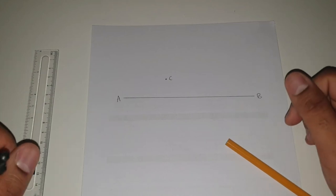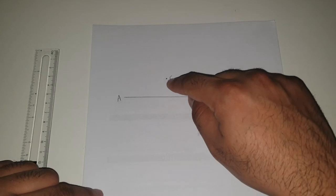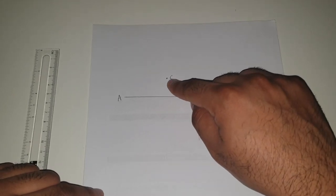In this video I'm going to show you how to draw a perpendicular bisector through a point that is off the line, which is C over here.